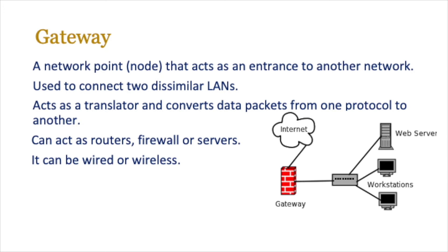A gateway is an alternative to a router. It's a network point or node that acts as an entrance to another network, and routers often play this role as well. It's used to connect dissimilar LANs — meaning they don't use the same protocol — and it acts as a translator, converting data packets from one protocol to another. A gateway can also act as a router, firewall, or server, and can be both wired or wireless. So gateways and routers have similar functionality, but a gateway is just the entrance, whereas routing has that intelligent logic about rerouting data as fast as possible to the destination.